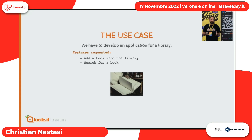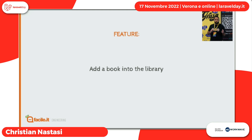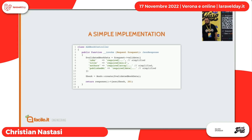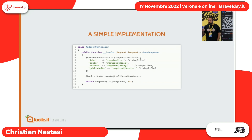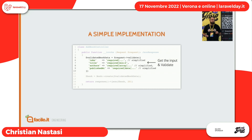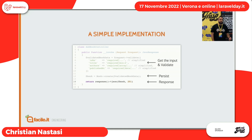Proviamo a prendere un caso d'uso molto semplice: una libreria o una biblioteca. Le richieste sono: voglio poter aggiungere un libro, voglio poter cercare un libro. Proviamo dalla prima feature: aggiungiamo un libro. L'implementazione semplice potrebbe essere questa — ovviamente mi devo definire la mia rotta, devo definire il mio modello. Se ci soffermiamo sul controller, abbiamo diverse parti: la prima parte che riceve l'input dall'esterno e lo valida, poi persistiamo con Eloquent le nostre informazioni, e infine torniamo un 201.